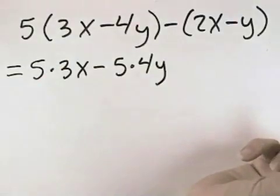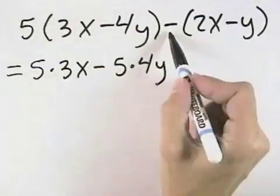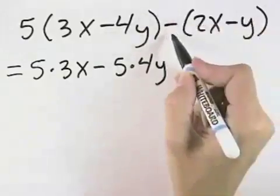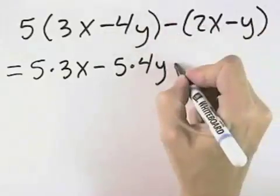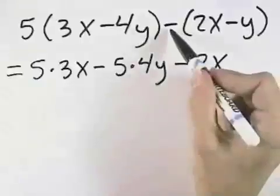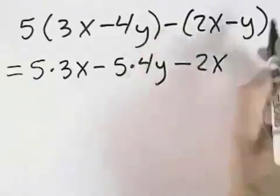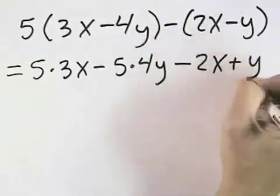In our second set of parentheses, we're distributing the negative sign through, so we'll have the negative, you can think of it as a negative 1 if you'd like, the negative times 2x makes that negative 2x. Then we have a negative and another negative. When you multiply negative times a negative, you get a positive y.